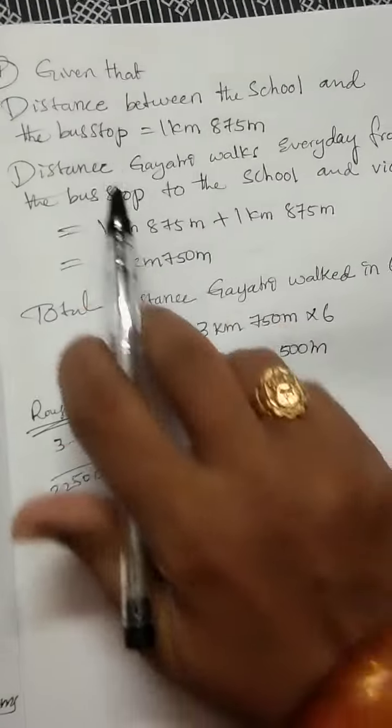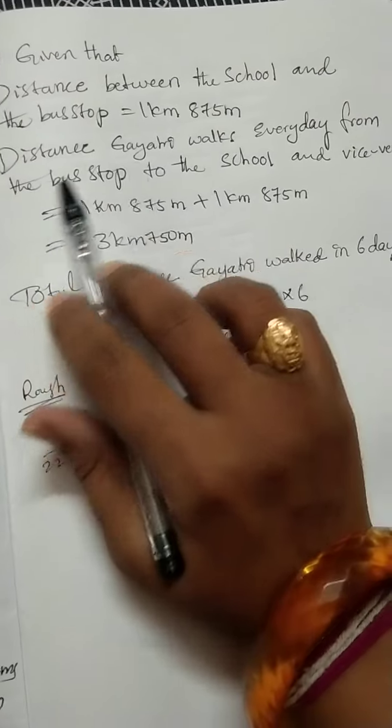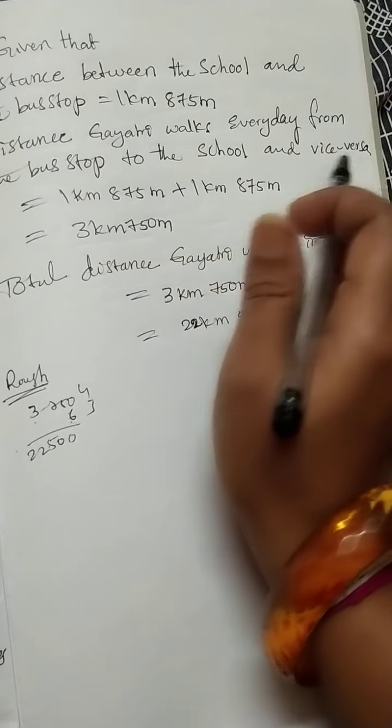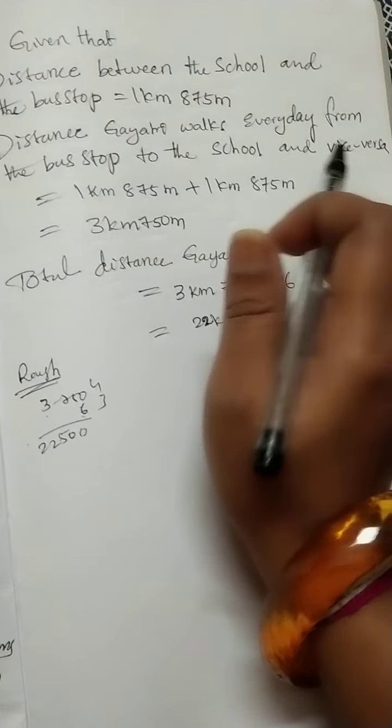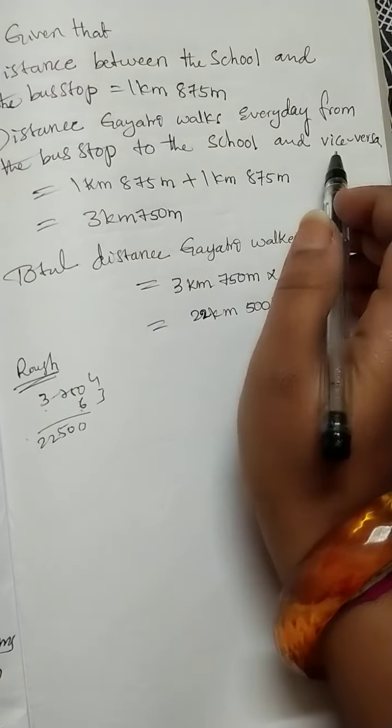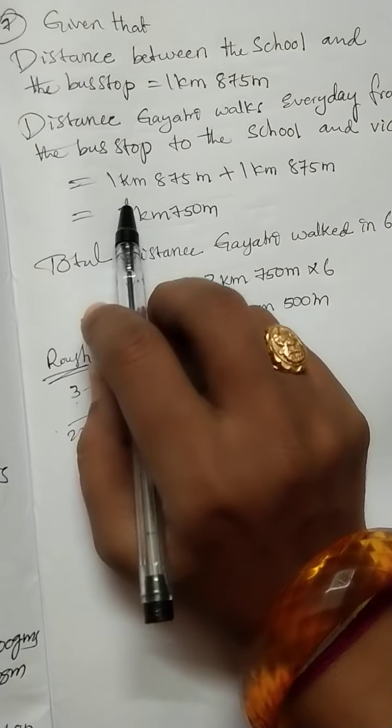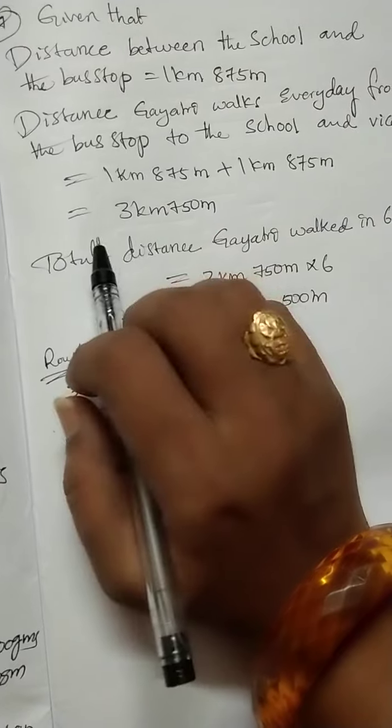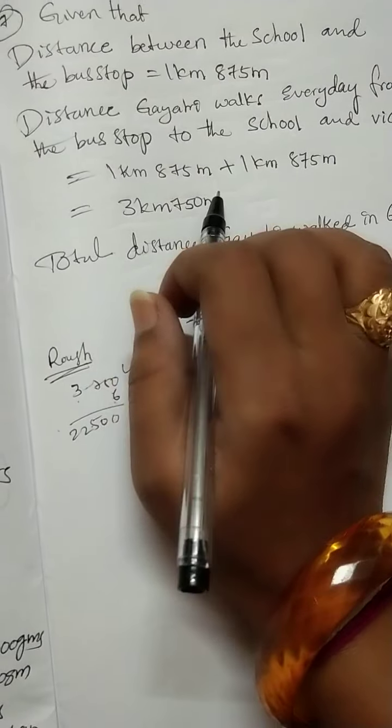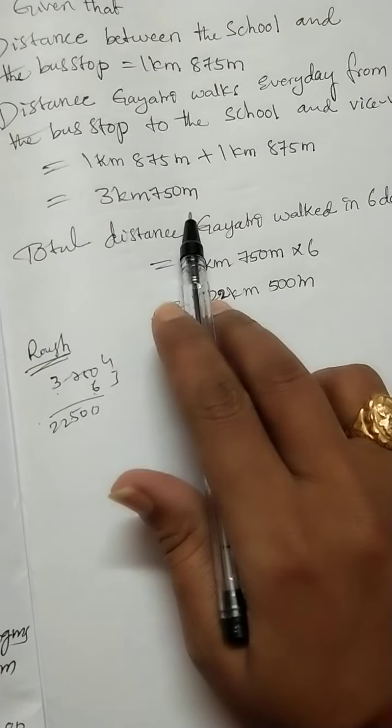Distance is 1 km 875 meters one way. Gayathri walks from bus stop to school and vice versa—that means school to home and home to school. We should add both ways: 3 km 750 meters after adding. This is the 1 day distance.